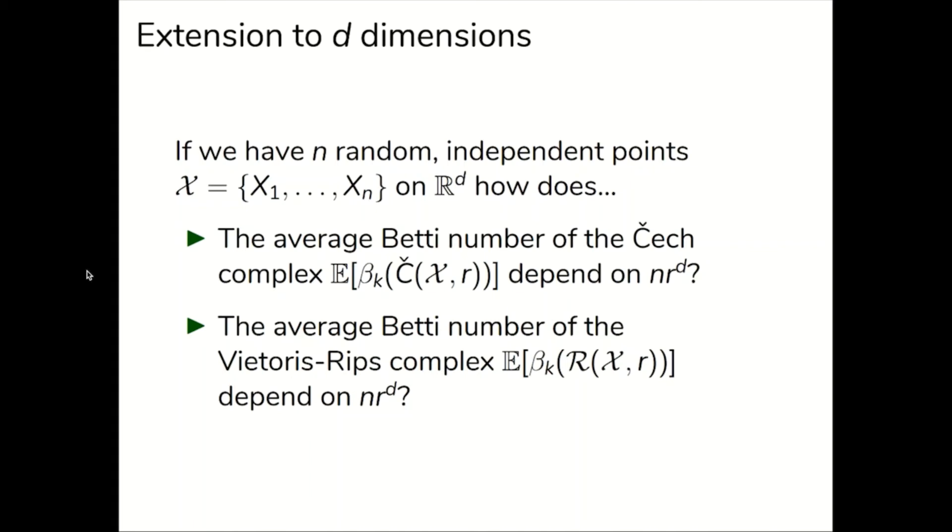In particular, if we have n random independent points, x1 to xn, with the same probability distribution on d-dimensional Euclidean space, the natural question to ask is how does the average k-th Betti number behave, and how does it depend on nr to the d? We pose this question for both the Čech and Vietoris-Rips complex.